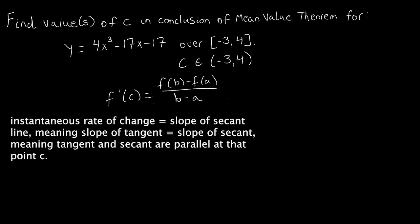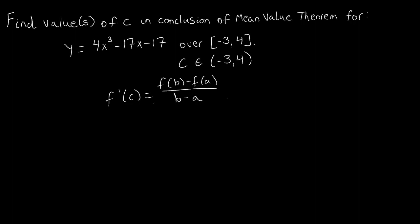So what we're wanting to find is where the instantaneous slope equals the average slope. In order to do that, let's take the first step in the process by evaluating f(b) minus f(a) over b minus a. If we were to take f(b) and f(a), what would that look like for us?